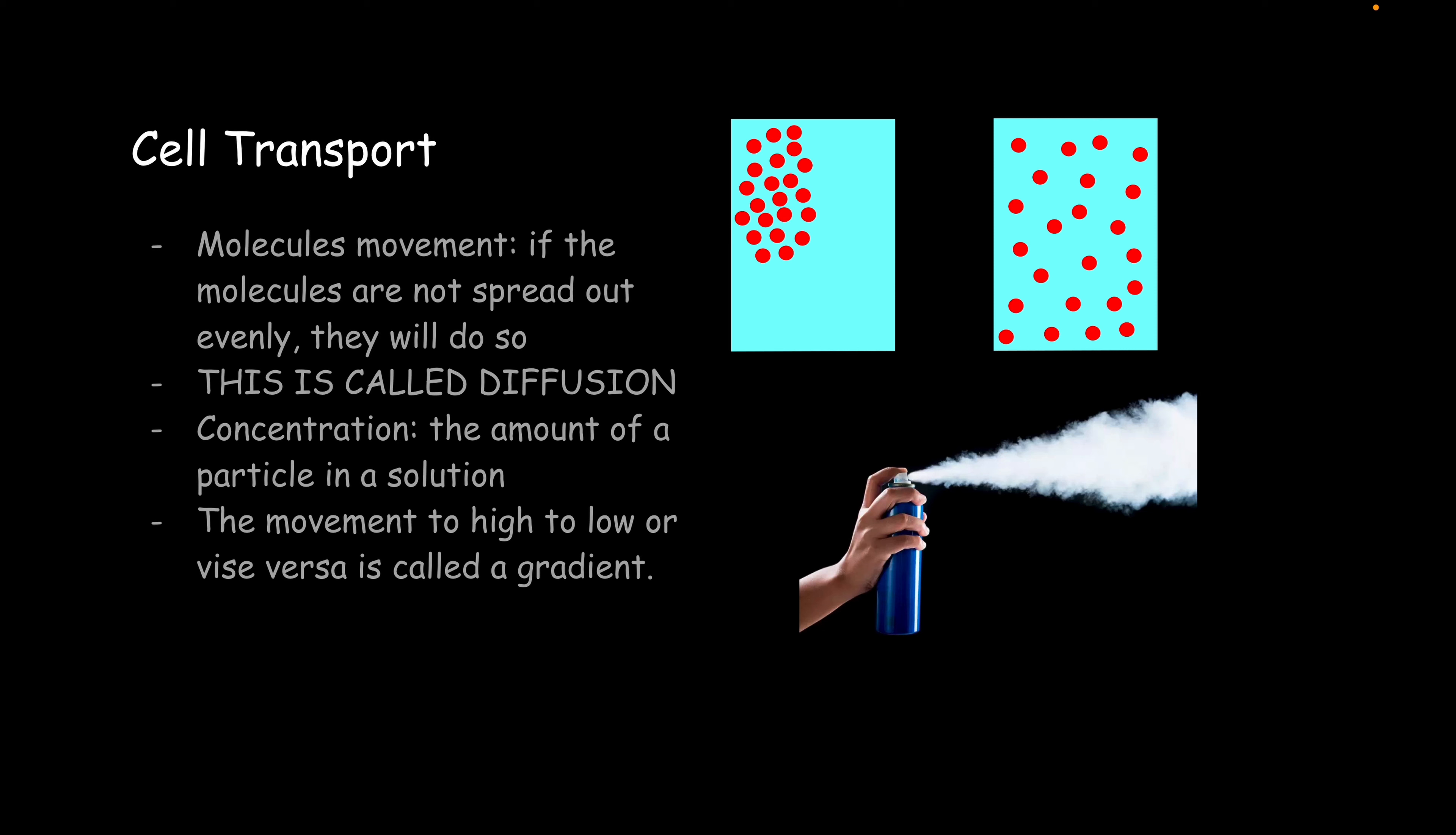The movement is high to low. It's called a gradient. So, in this little can here, you know how you ever spray like an aerosol can of Febreze? You're going to notice it's going to start very tightly packed. It's going to spread out. That's diffusion, basically, in a good visual way to show you guys.